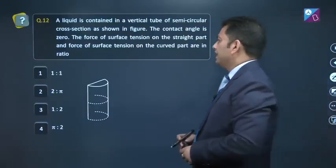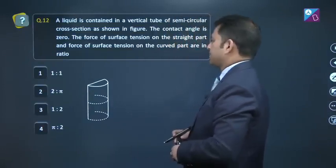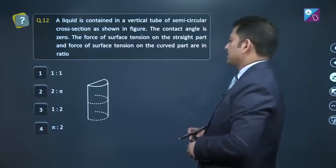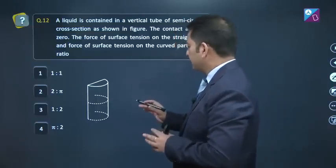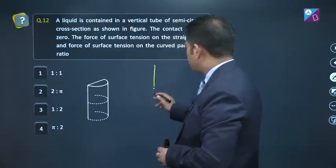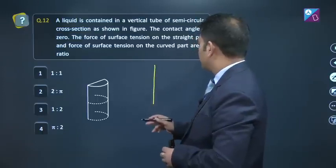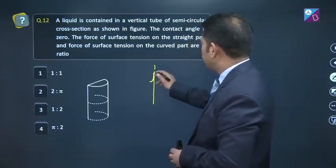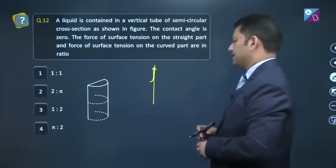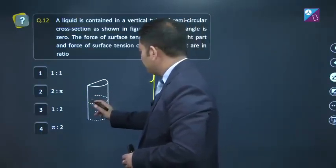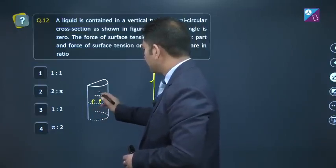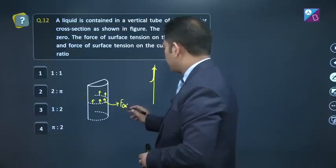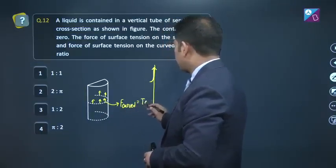Moving to question number 12. A liquid is contained in a vertical tube of semicircular cross section, the contact angle is 0. The force of surface tension on the straight part and the force of surface tension on the curved part. If contact angle is 0, the liquid climbs like this. The force will be in this direction, the force of surface tension. So entire curved part will have force upward, climbing to the wall. All forces in the same direction, so force on the curved part equals T multiplied by length, that is pi r.